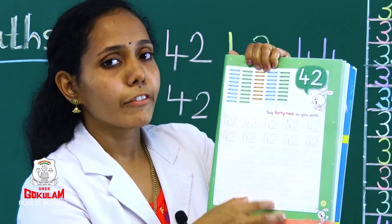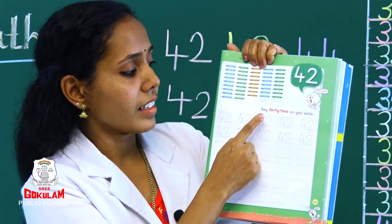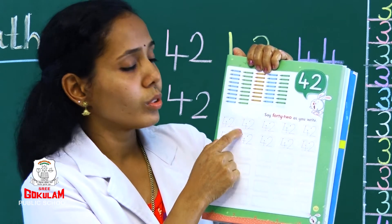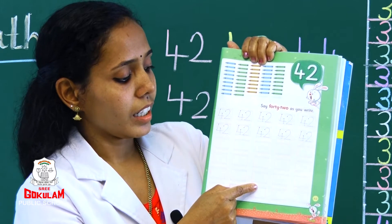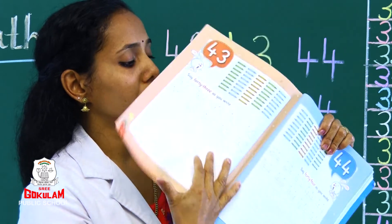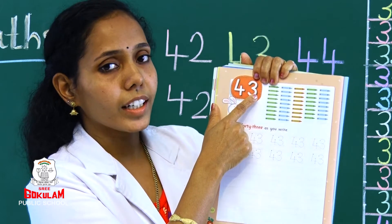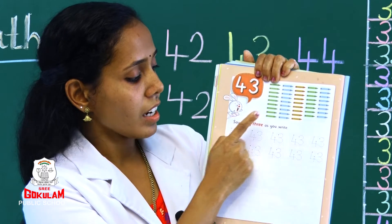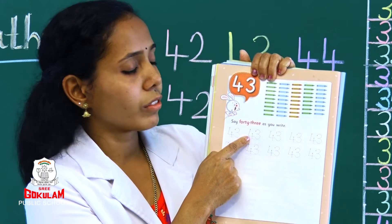Say 42 as you write: 4, 2, 42. Next number 43: 4, 3, 43. Count, say 43 as you write: 4, 3, 43.